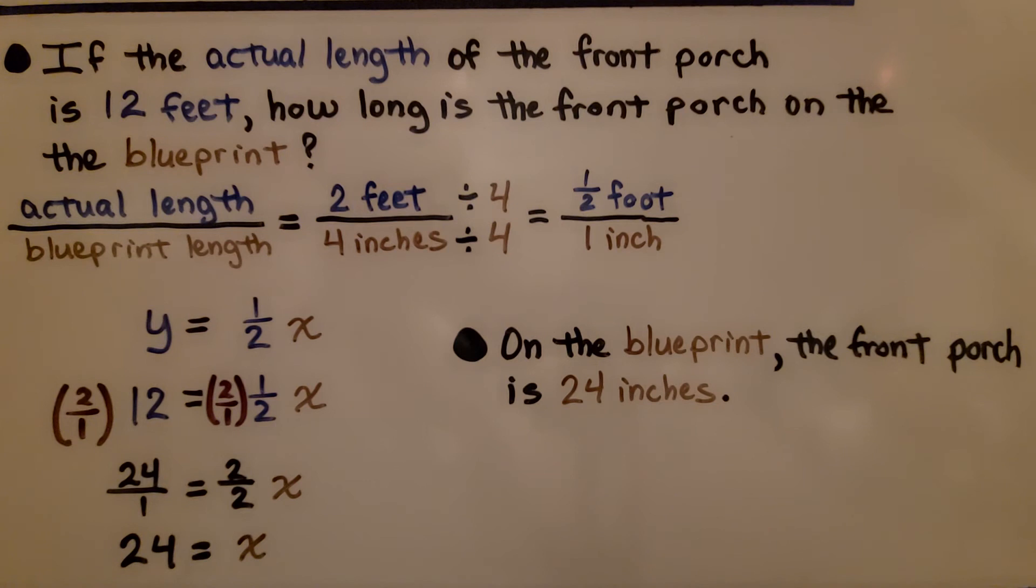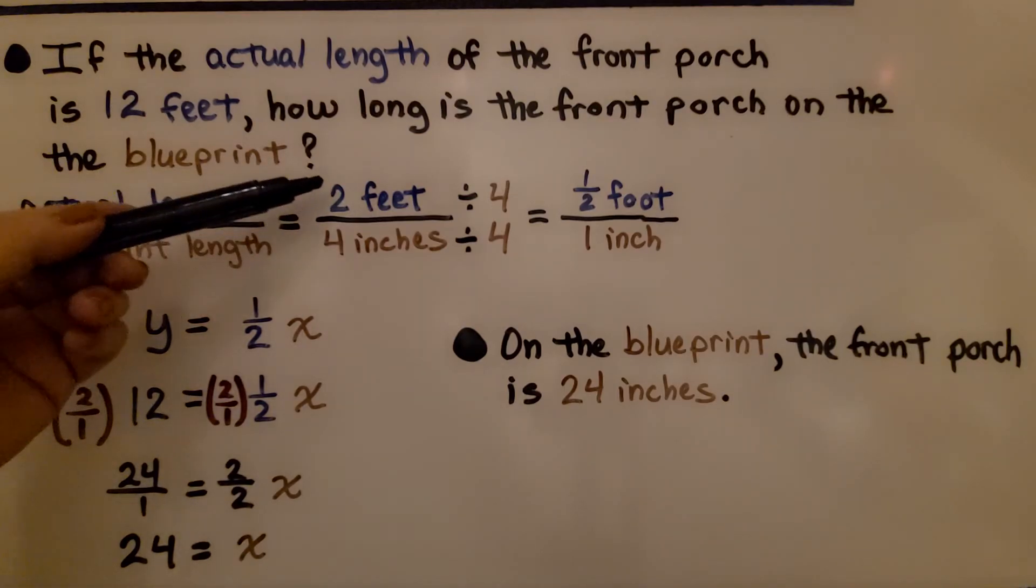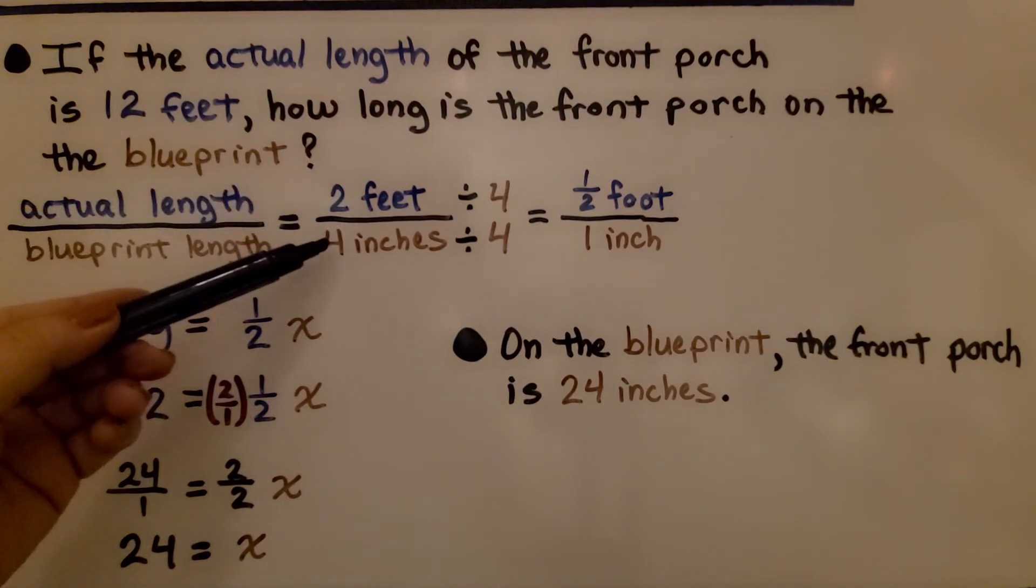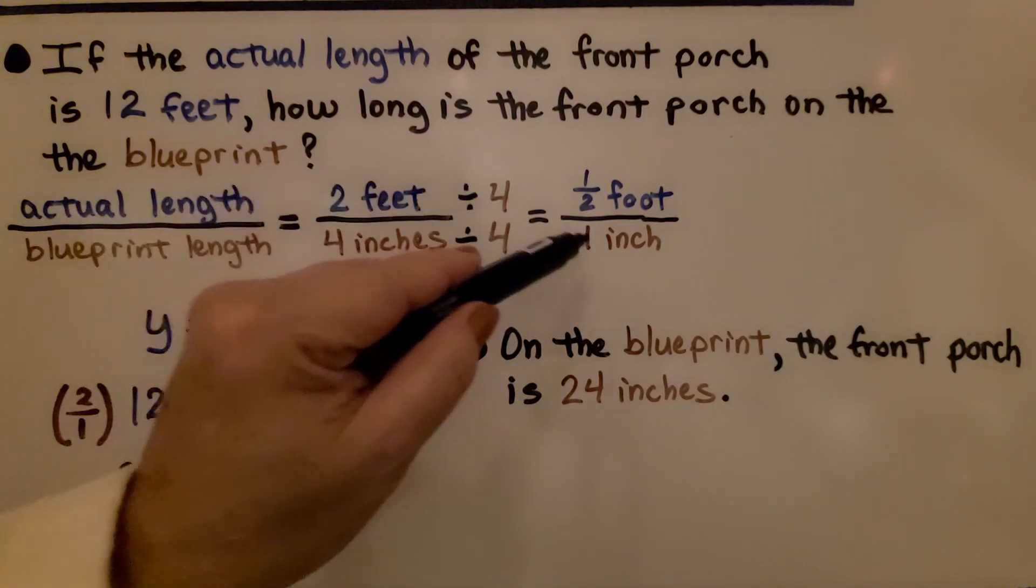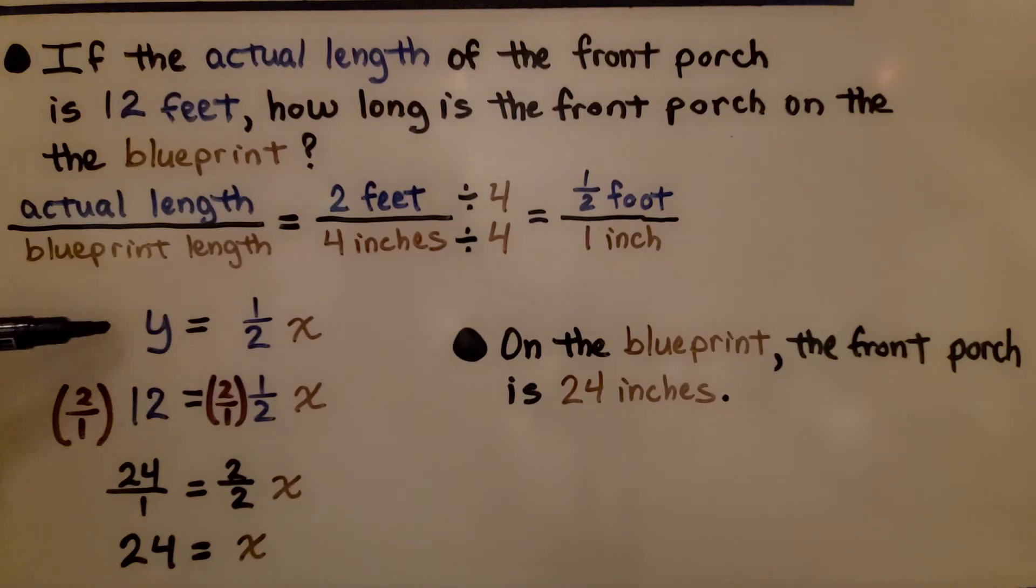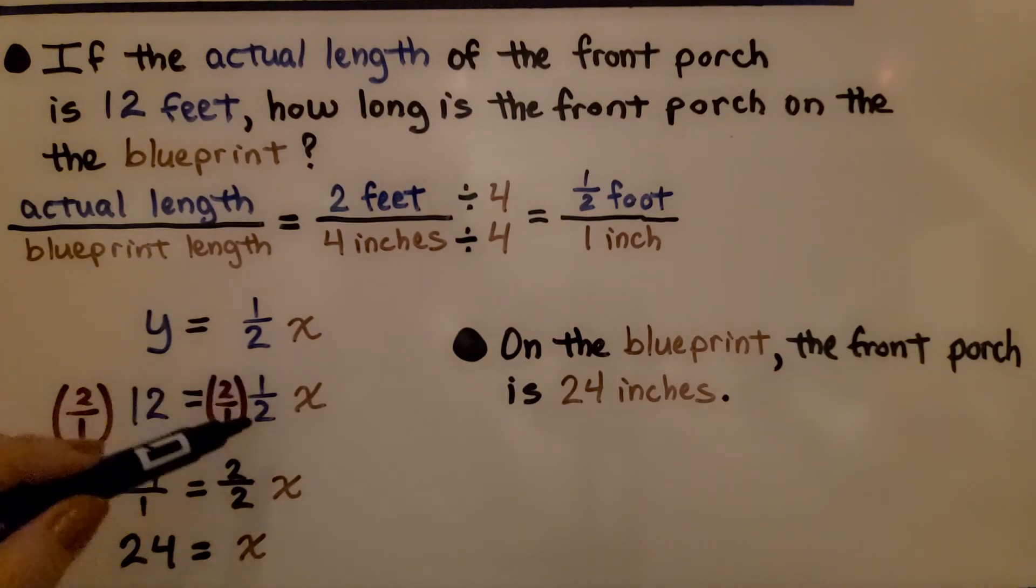If the actual length of the front porch is 12 feet, how long is the front porch on the blueprint? We use proportional reasoning to find the unit rate. We add our actual length over the blueprint length. If we know the actual length is 2 feet to a blueprint length of 4 inches. We divided them each by 4 to get 1 for our denominator. We used our equation y is equal to half x. And if the actual length is 12 feet, we put 12 is equal to half x. We put the 12 in place of y.